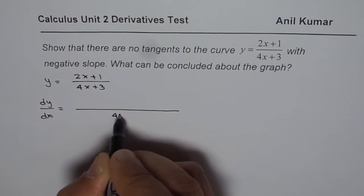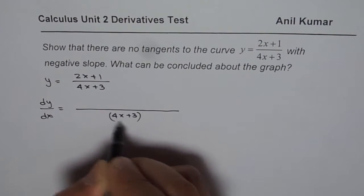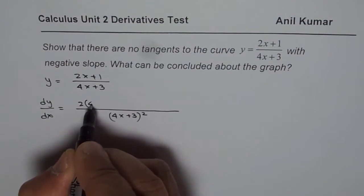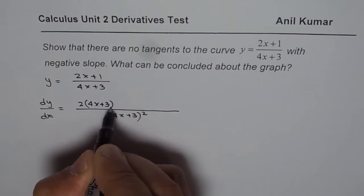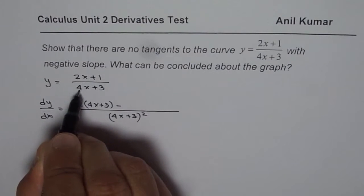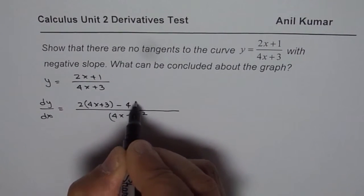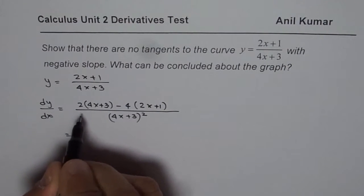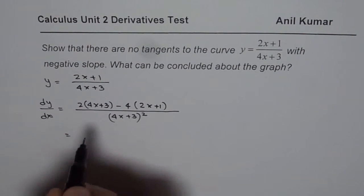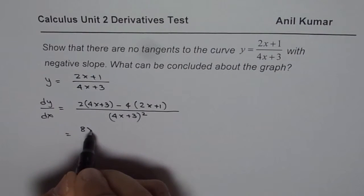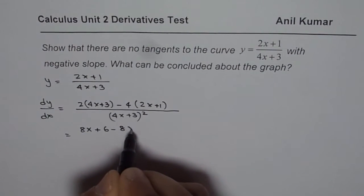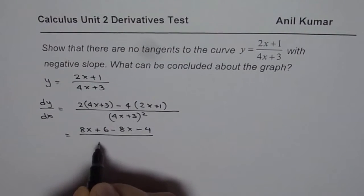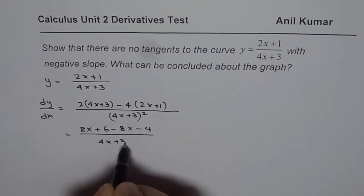So we get 4x plus 3 whole squared in the denominator. The derivative of 2x plus 1 is 2, times 4x plus 3, minus the derivative of the denominator which is 4, so 4 times 2x plus 1. Simplifying: 8x plus 6 minus 8x minus 4, over 4x plus 3 whole squared.